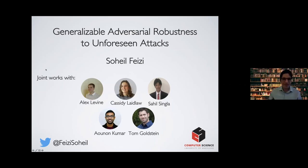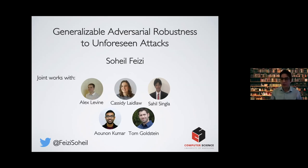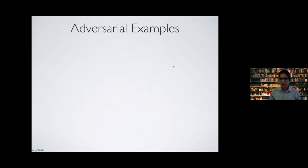Thank you for the kind introduction, and thanks everyone for virtually being here. So today I'm going to talk about generalizable adversarial robustness to unforeseen attacks. This is based on joint works with Alex Levin, Cassidy Laidlow, Sahil Singla, Anand Kumar, and Tom Goldstein. To make sure we are all on the same page, first I'll do a quick overview of adversarial robustness and attacks and defenses, and then I'll explain all recent results about them.